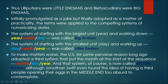To make matters worse, the U.S., for some perverse reason long ago adopted a third system with the month at the start of the sequence — month-day-year. And that system, of course, is now called Middle Indian, although Jonathan Swift even found the idea of having a third people opening their eggs in the middle too absurd to contemplate.